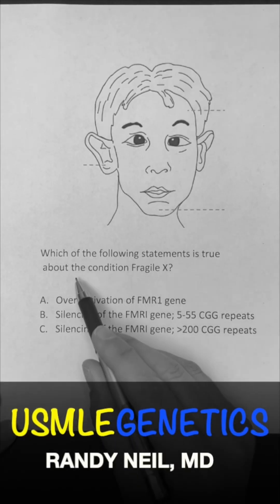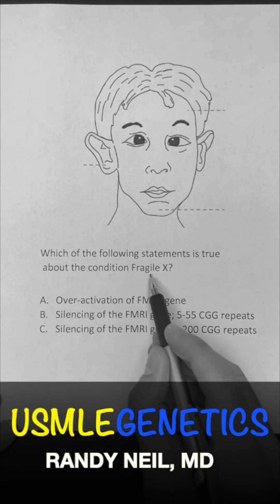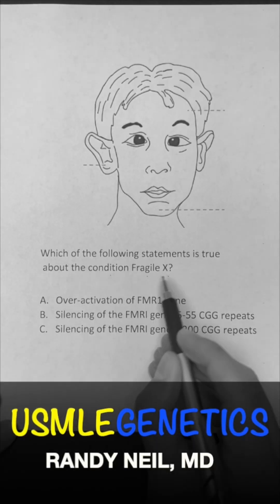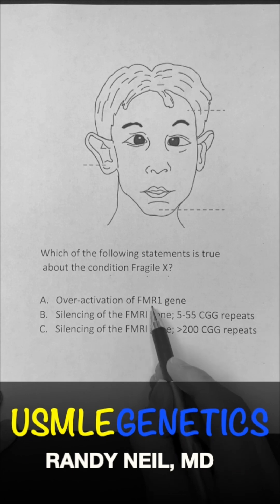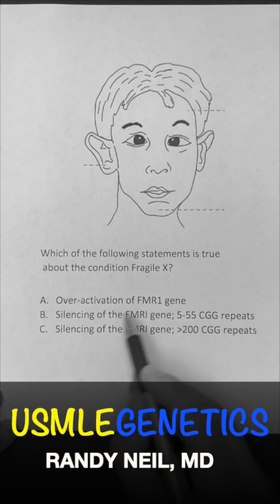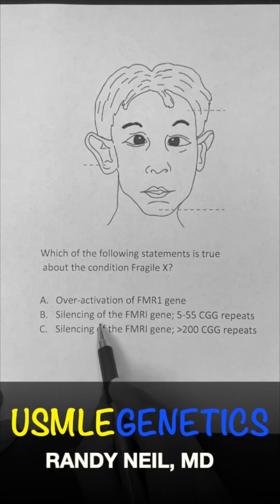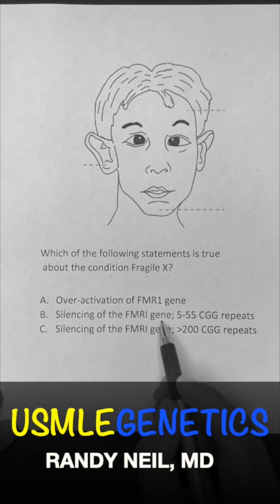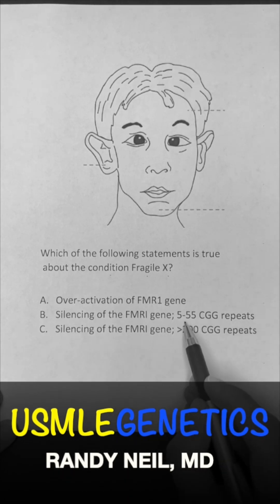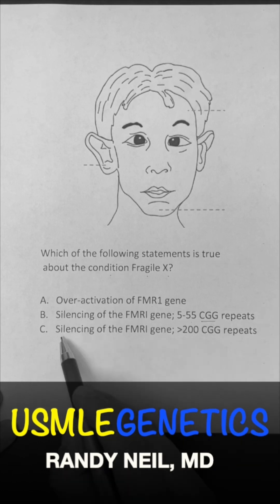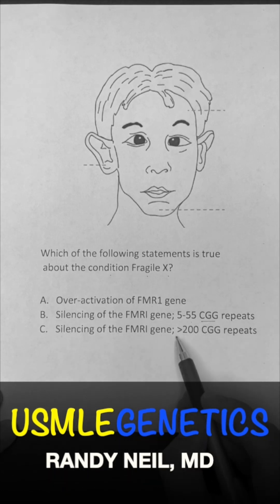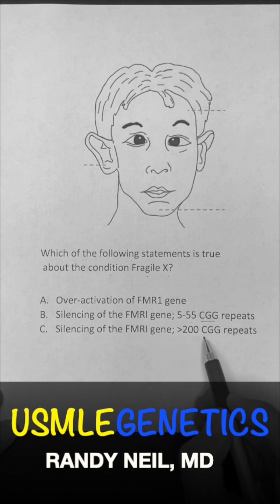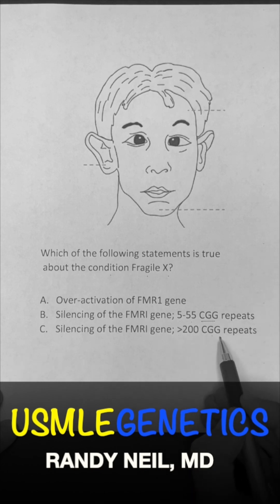Which of the following statements is true about the condition Fragile X? Is it A, overactivation of the FMR1 gene? Is it B, silencing of the FMR1 gene with 5-55 CGG repeats? Or is it C, silencing of the FMR1 gene with greater than 200 CGG repeats?